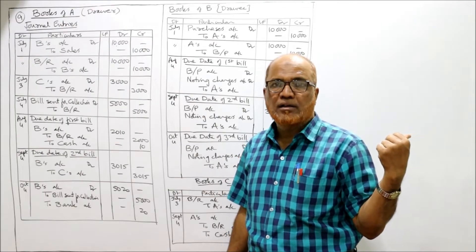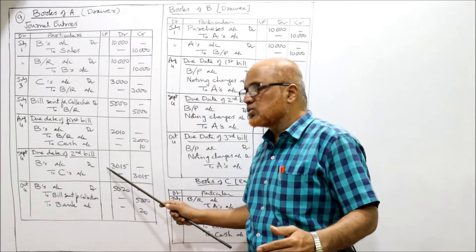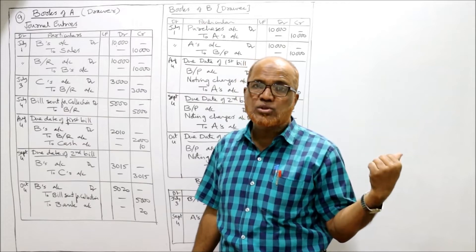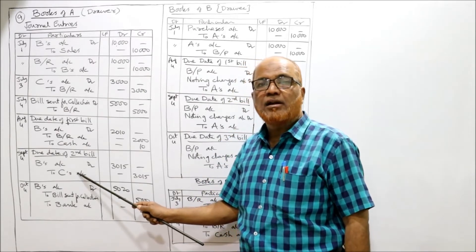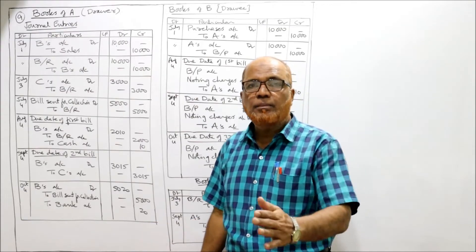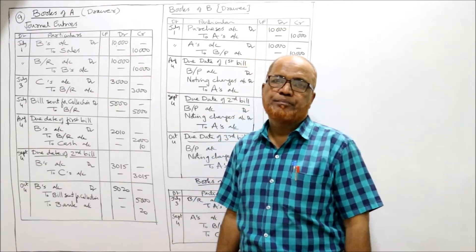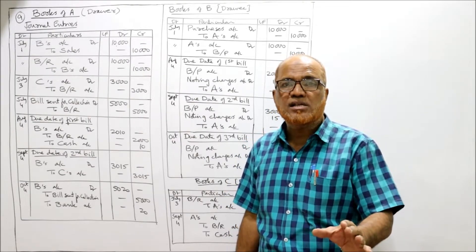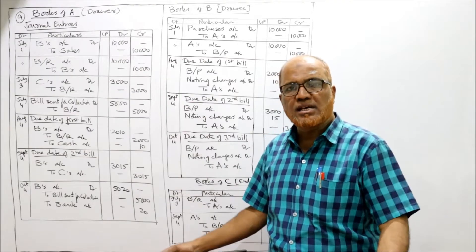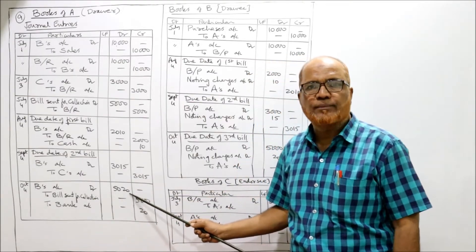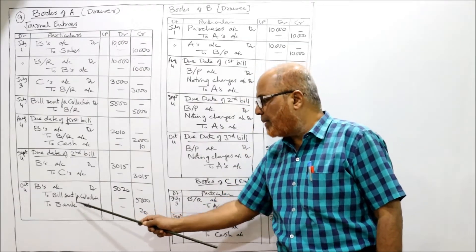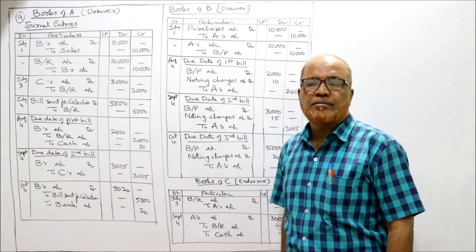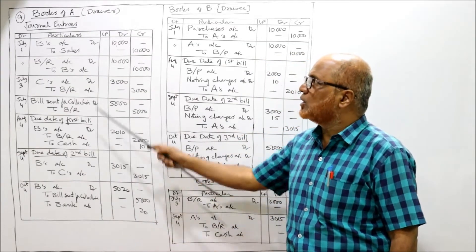For the third bill sent to bank for collection — the bill is dishonored and noting charges are 20 rupees. Entry: B's account debit 5,020 to bills sent for collection 5,000 to bank 20 rupees — the banker pays the 20 rupees noting charges. These are the entries in the books of A for the dishonoring of the third bill.